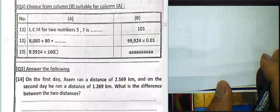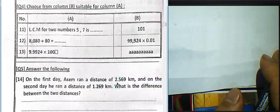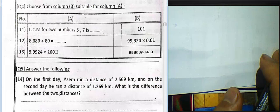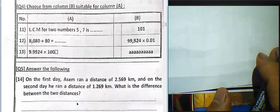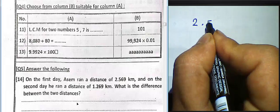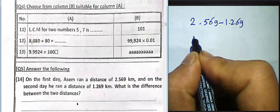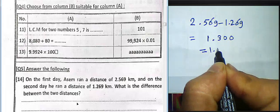Question 14: on the first day, someone ran a distance of 2.569 kilometers, and on the second day, 1.269 kilometers. What is the difference between the two distances? We subtract: 2.569 minus 1.269. 9 minus 9 equals 0, 6 minus 6 equals 0, 5 minus 2 equals 3, 2 minus 1 equals 1. The result is 1.3 kilometers.